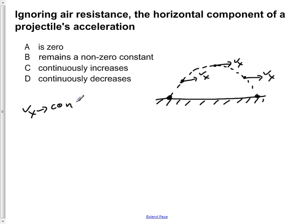So Vx is constant. If Vx is constant, then the acceleration, or Ax, in the horizontal direction is equal to zero.